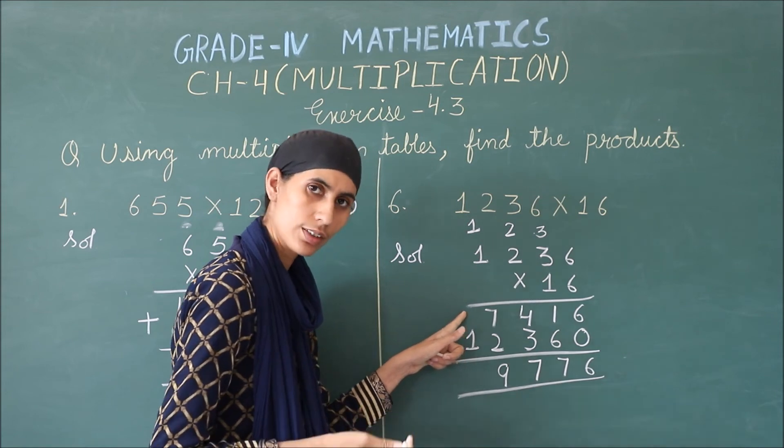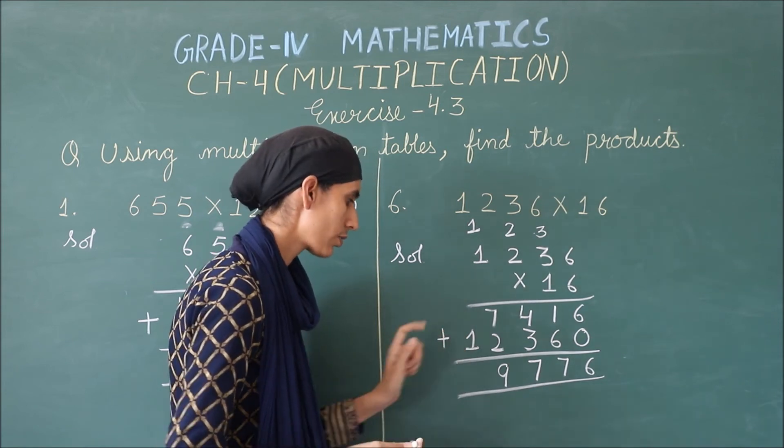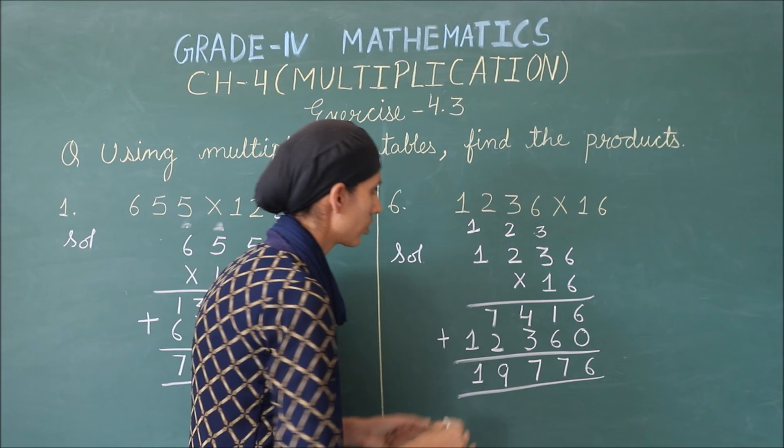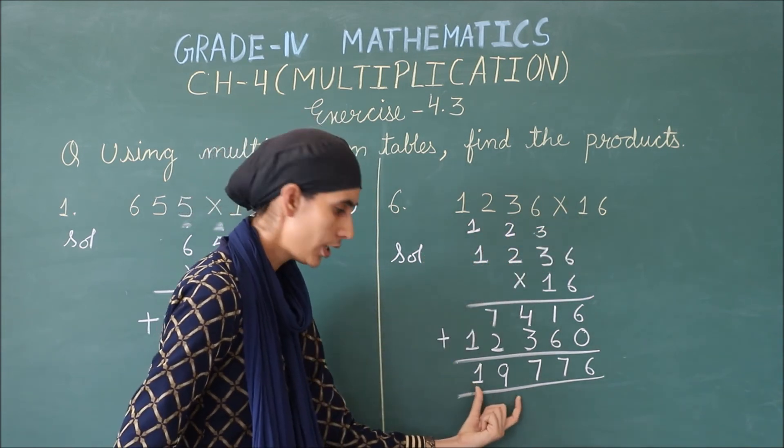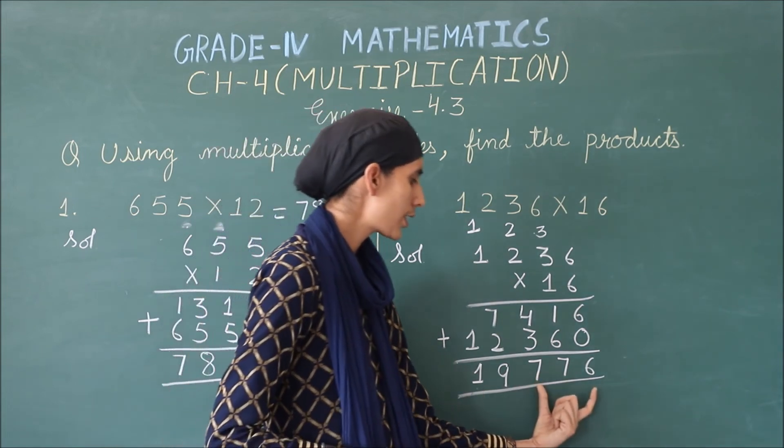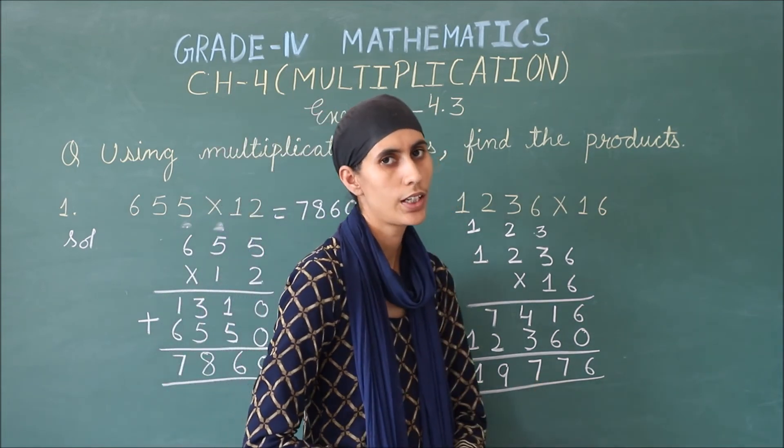Here, we are having nothing. It means there is 0. 0 plus 1 is 1. So, 1236 multiply by 16. Your answer is 19,776.